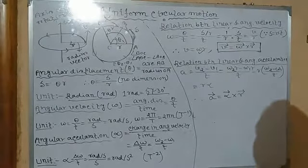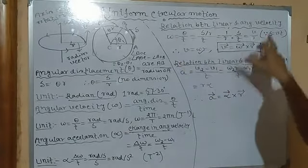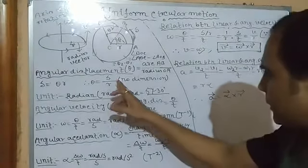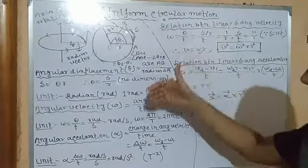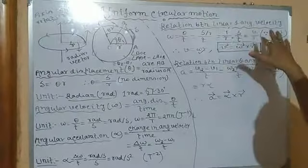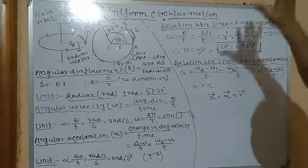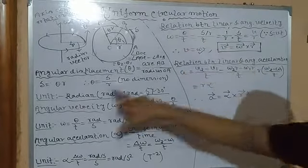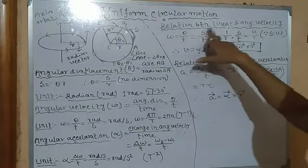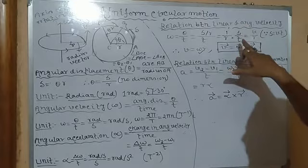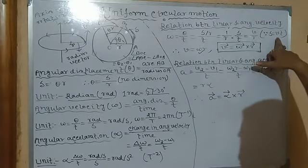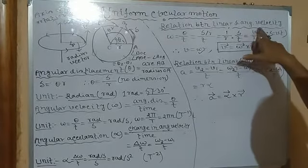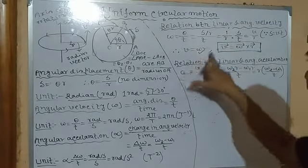Now we will see the interesting relation between linear and angular velocity. We already know that omega equals theta by t. Since theta equals S by R, we get omega equals (S by R) divided by t, which equals (1 by R) times (S by t). Since S by t equals v (linear velocity), we get omega equals v by R, and therefore v equals omega times R. This is the relation in scalar form.